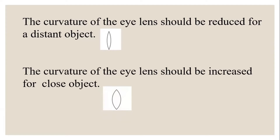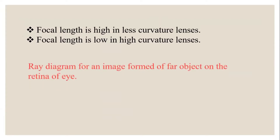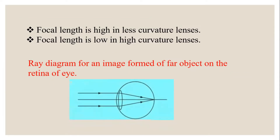We are going to see how the focal length changes with curvature. Focal length is high in less curved lenses and low in highly curved lenses. For a far object, the parallel light beam coming from the far away object is focused onto the retina, as shown in the picture.